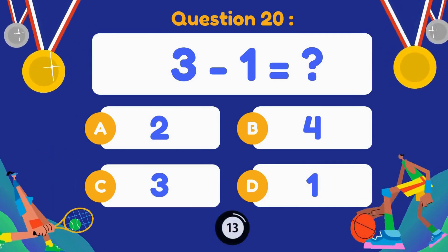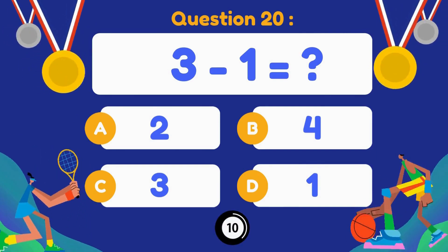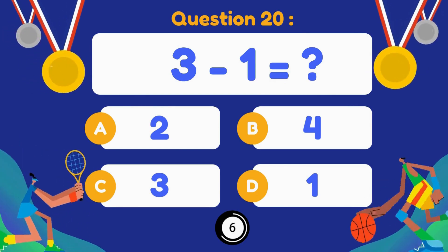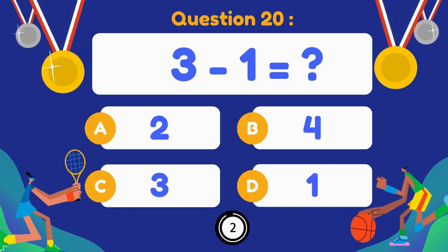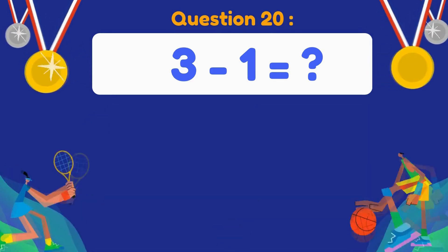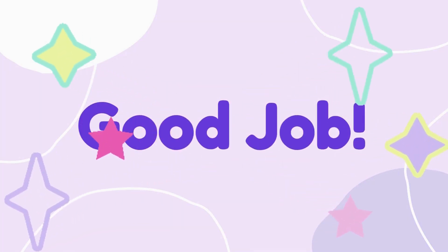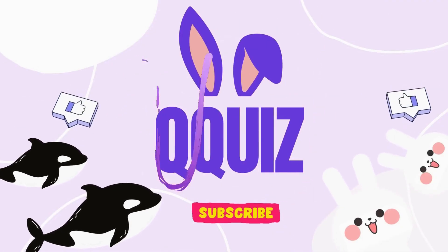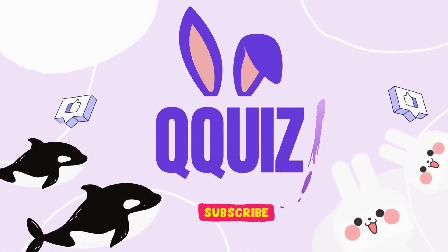3 minus 1. 3 minus 1 equals 2. 2 minus 1. 6 minus 2. 6 minus 5. 6 minus 6. 7 minus 1. 8 minus 1.